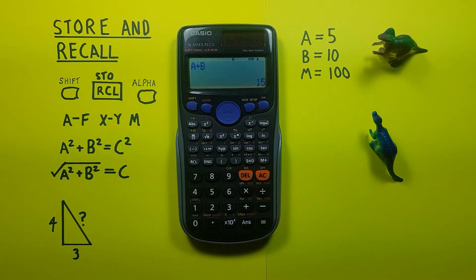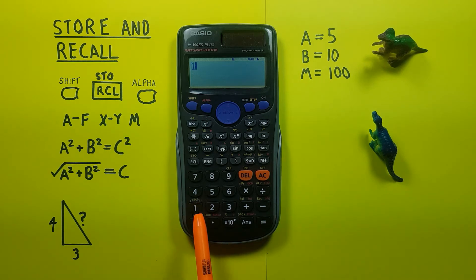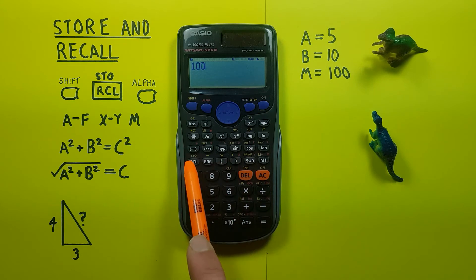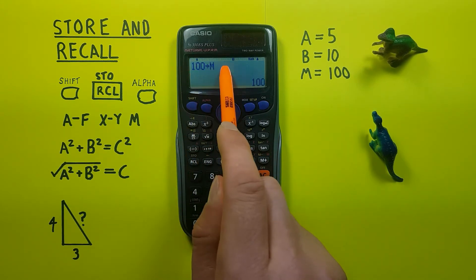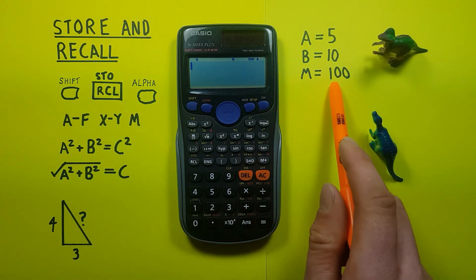We also have the M storage slot. Now this one's unique because it's the independent memory slot, which means when we store something in there, store M, there we go, 100 into M, we can add and subtract to it with the M plus and M minus function here.